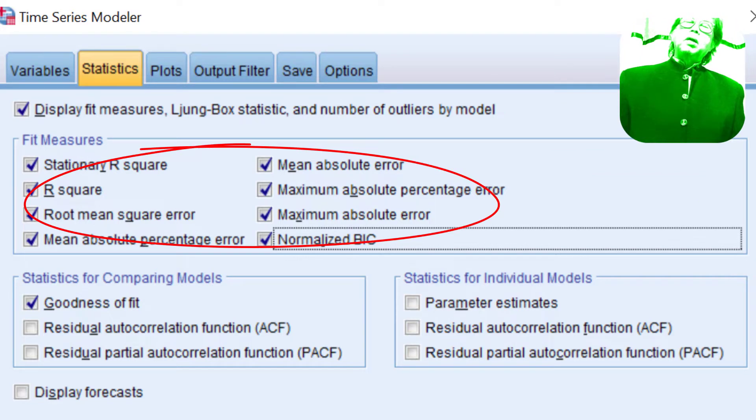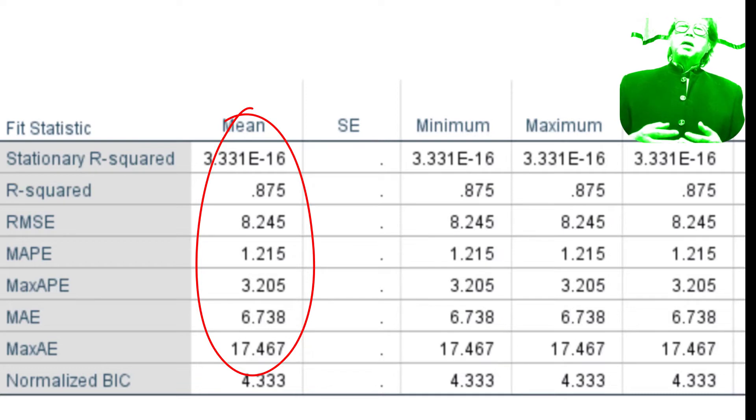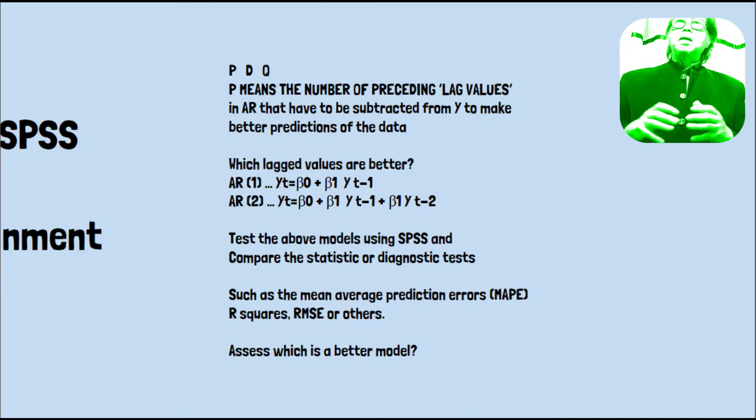For example, you can compare the mean average prediction error, MAPE, or R-squares or others to assess the performance of models 1, 2, 3. Which one is stronger?